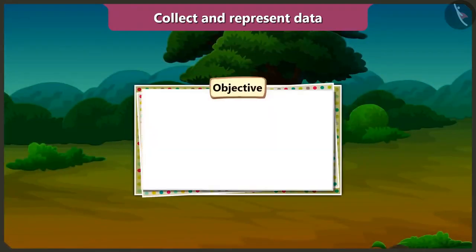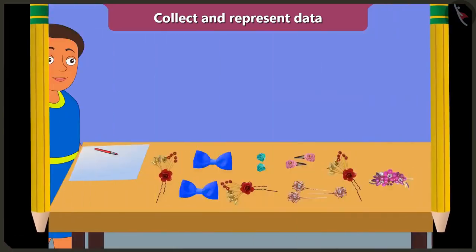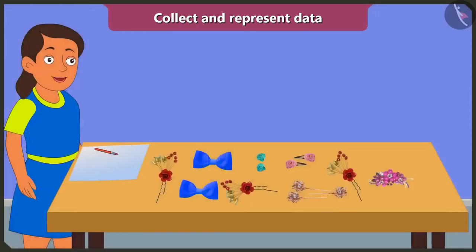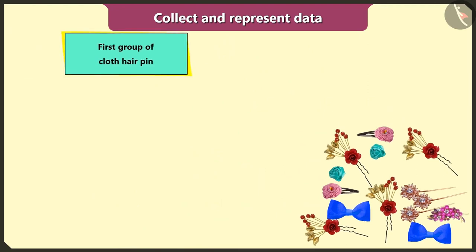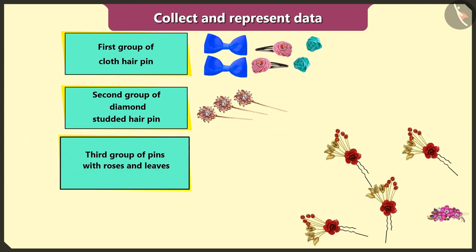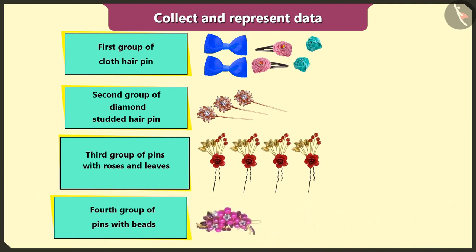Children, in this video we will see some more interesting examples of collecting data and representing them in a table. Bunty taught me how to represent data in a table after collecting it. I can easily find out how many types and the counts of hairpins I have. First, I will make groups of similar hairpins: first group of cloth hairpins, second group of diamond studded hairpins, third group of hairpins with roses and leaves, and fourth group of hairpins with beads.